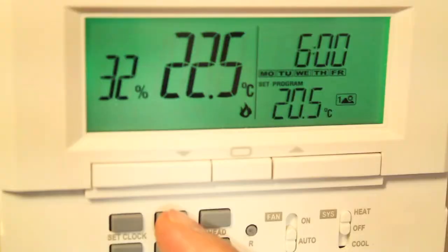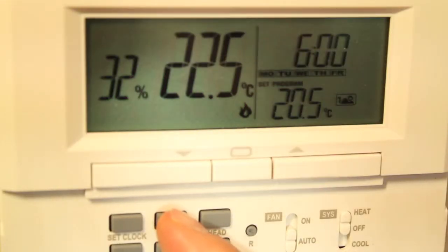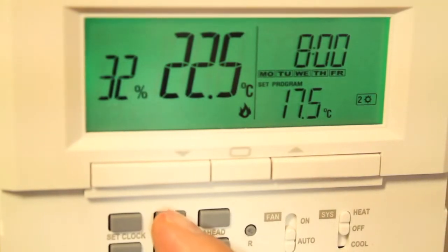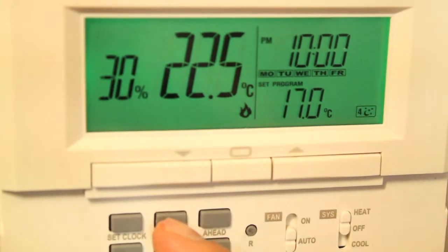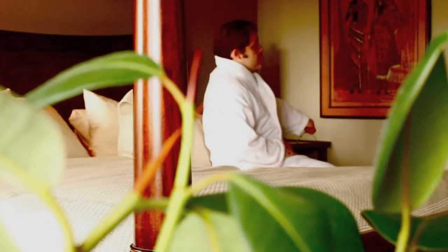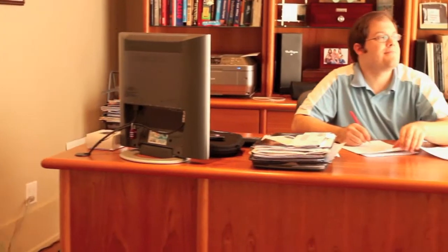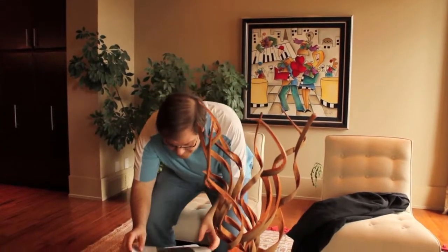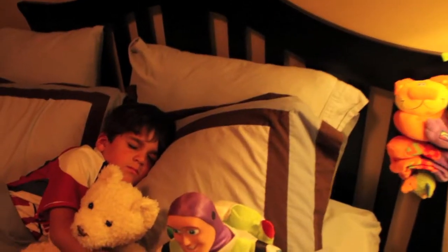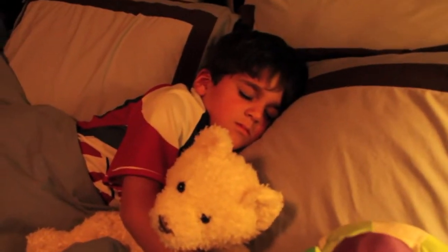Now we will be programming the thermostat. These models are designed to automatically change their temperature four times a day. These periods are designated as one morning, two day, three evening, and four overnight. The idea is that program one sets the temperature to a comfortable setting before you wake up, program two conserves energy when you're at work, program three makes it comfortable in the evening before you return home, and program four conserves energy while you sleep.